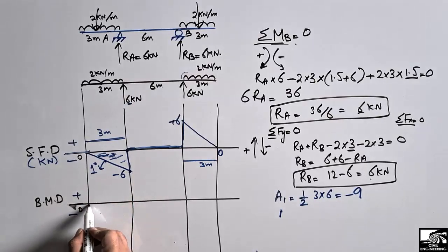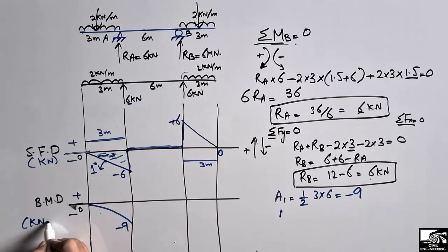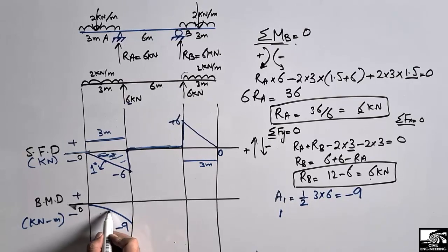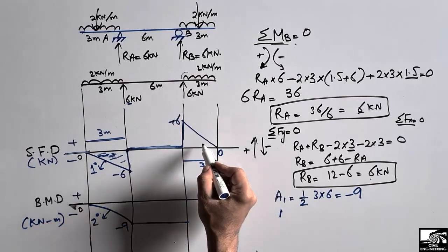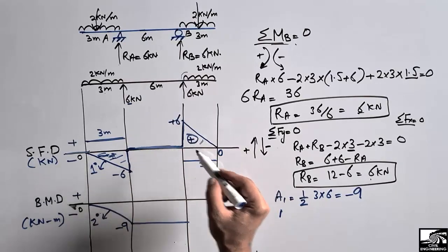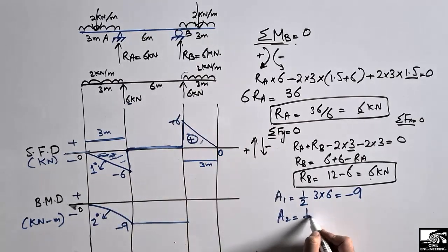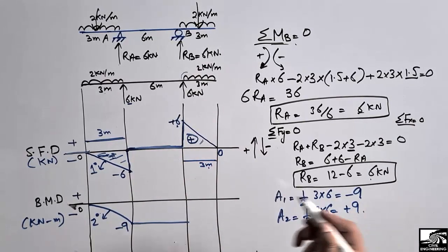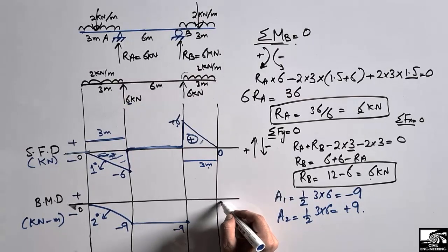Over the middle portion where there is no shear force, the bending moment diagram is a straight line. At support B, the right triangle (A2) is a positive shear force triangle with half × 3 × 6 = plus 9 kilonewton·meters. Adding minus 9 and plus 9 gives zero, so the bending moment is zero at the right end. The bending moment diagram is a parabola in the overhanging regions and a straight line in the middle.